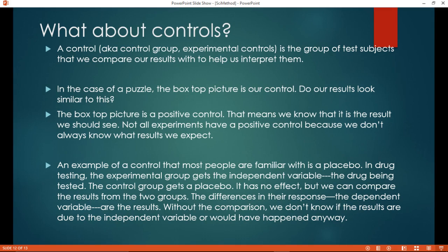An example where we would have a control that's not a positive control. Medical testing, drug testing. We have a group that gets a placebo. They're the control group. We don't know what the outcome is, but we're going to compare the group that did get the drug with the group that got the placebo. The difference between the two gives us our outcome. It lets us know that the results are due to the independent variable and not that they would have just happened anyway because the placebo group did or did not have that change. So the group we compare with to help us interpret our results is our control group.